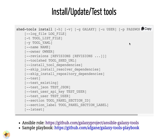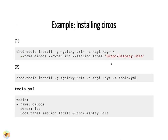A Galaxy administrator can install tools with the shed_tools command by providing their admin API key. They can specify name, owner, and section label as arguments, or provide a YAML list of tools. For example, installing Circos: these two approaches are equivalent — Circos can be installed with name, owner, and section label as command-line arguments, or provided in a YAML file. The advantage of the YAML approach is that many tools can be listed and installed all at the same time.